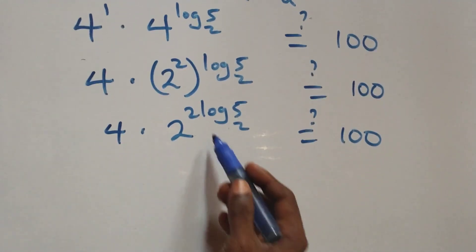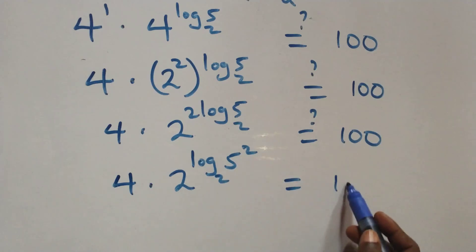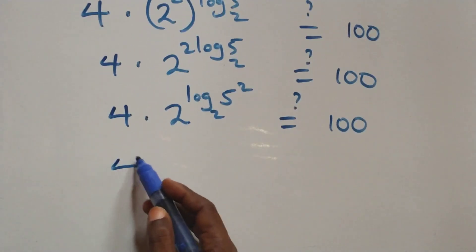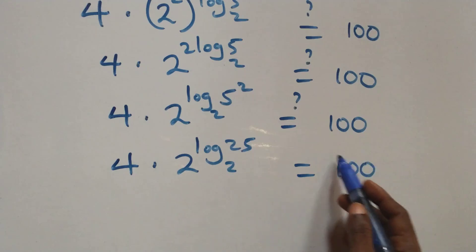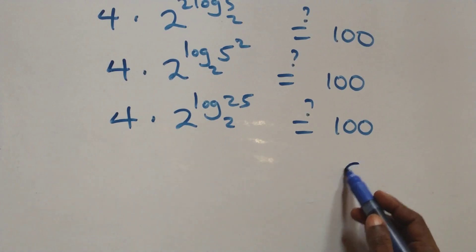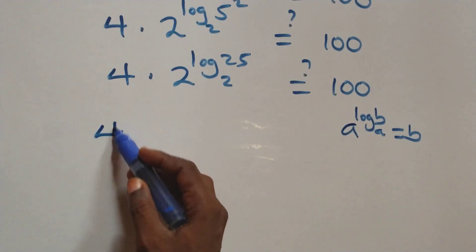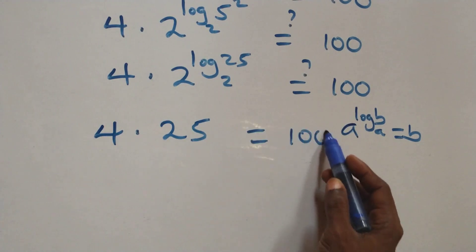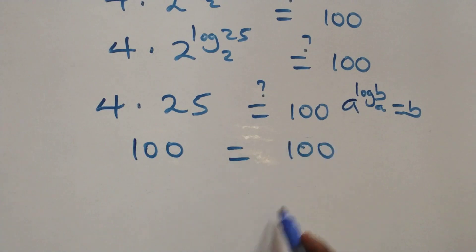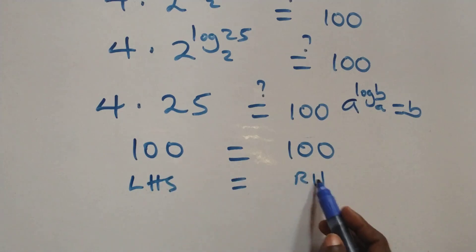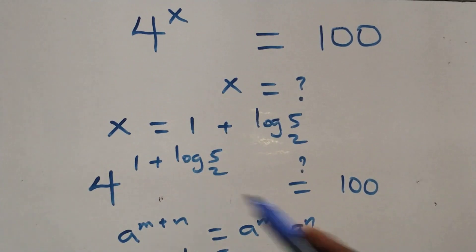We rewrite 4 as 2 squared, so this becomes 4 times 2 squared raised to the power log₂5, which equals 100. Applying the logarithm identity, the left-hand side simplifies and equals 100 on this side. Therefore, we conclude that x equals 1 plus log₂5 satisfies the given problem.